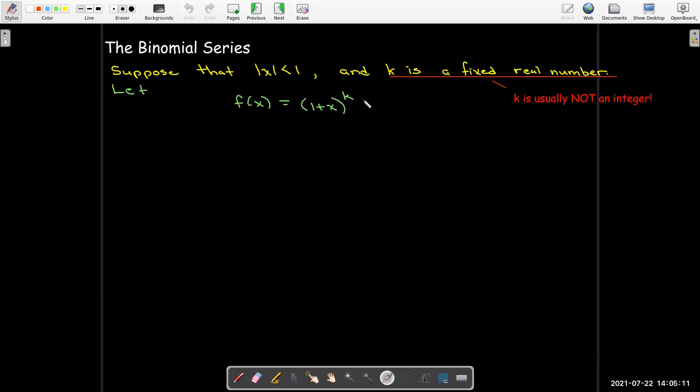And we're going to define f as 1 plus x to the power of k. So it looks like a binomial. So we have 1 plus x to the power of k, but k in this case is any real number. k could be radical 2 or pi.